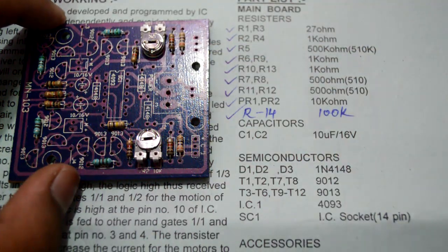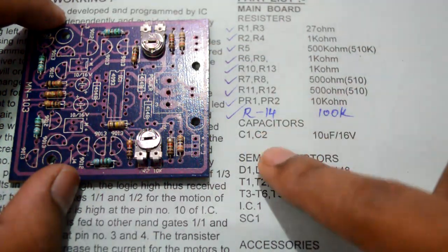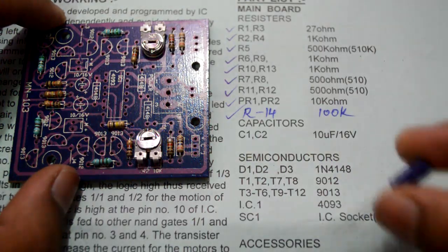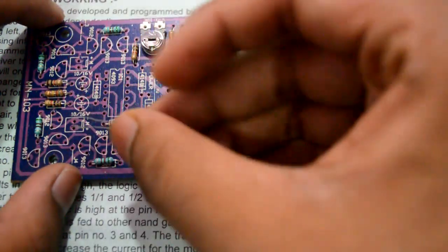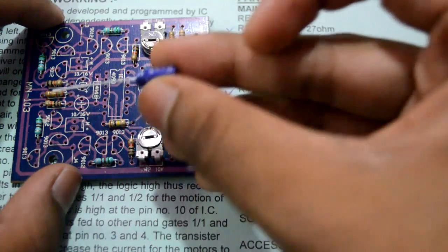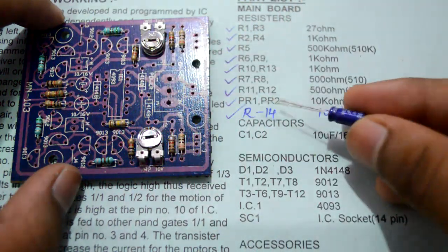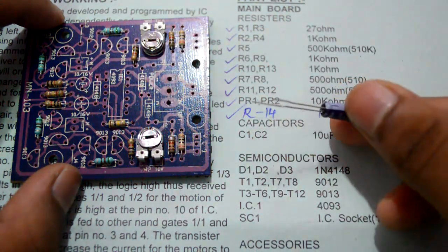Now since we have completed with both the 10 kilo ohm presets, we'll be moving to the capacitors which are of 10 uF and which look like this. They'll be going over here and here, so please make sure that you are soldering them with the right polarity.